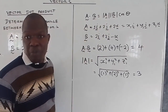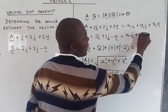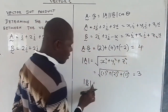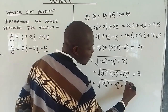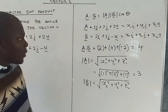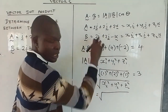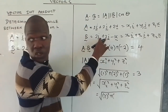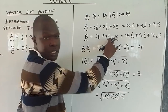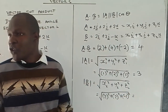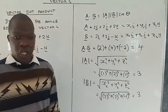Then we look for the magnitude of b. The magnitude of vector b is the square root of x2 squared plus y2 squared plus z2 squared. Substituting, x2 is 2, y2 is 2, and z2 is negative 1. All negatives when squared go positive. So we have 2 squared plus 2 squared plus 1 squared, which equals 9. Square root of 9 gives us 3.